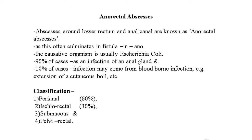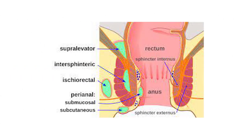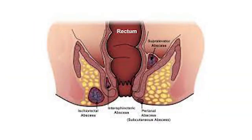The types of anorectal abscesses are: perianal, contributing 60%; ischio-rectal, contributing 30%; and submucous and pelvirectal, contributing only 10%. Here is a good image showing all types of anorectal abscesses — supraelevator, intersphincteric (shown by arrow), ischio-rectal abscess, perianal abscess, submucosal abscess, and subsphincter externus. Another picture shows the ischio-rectal and submucosal abscesses.